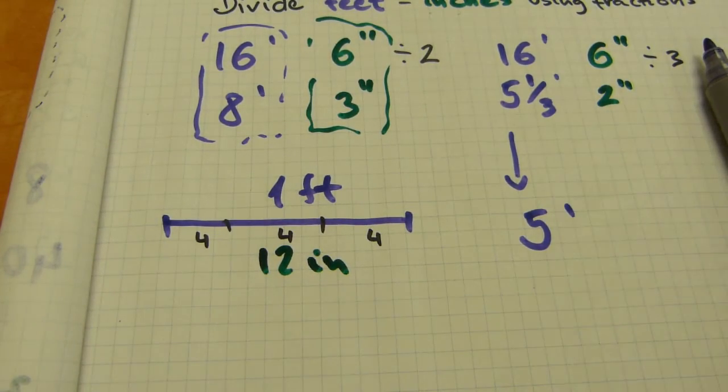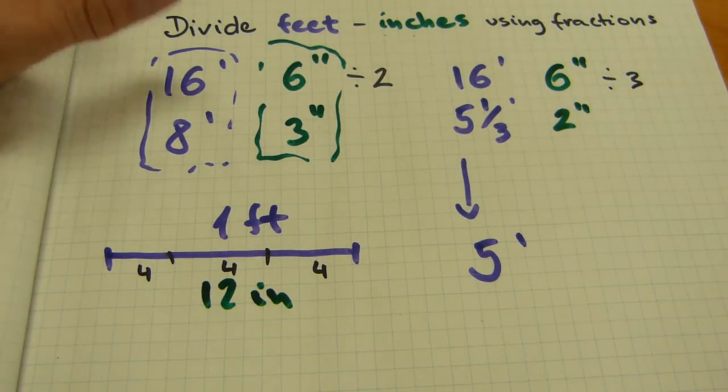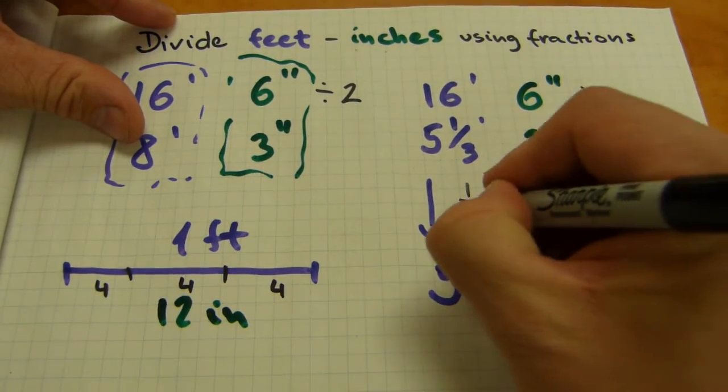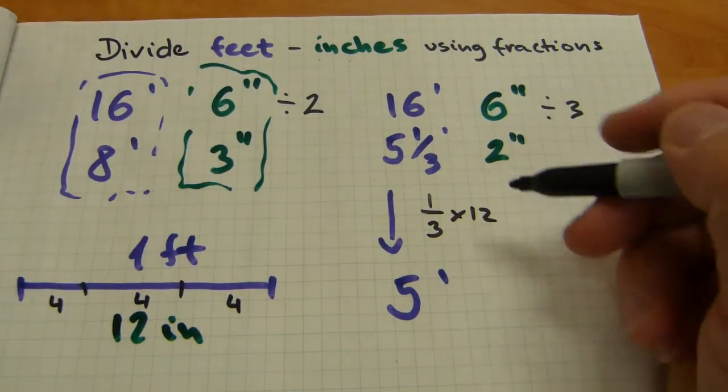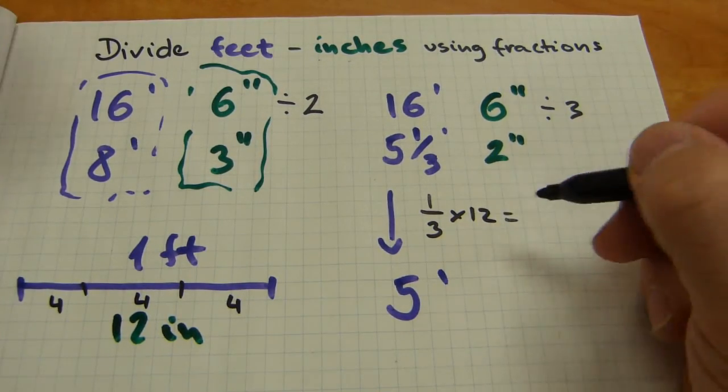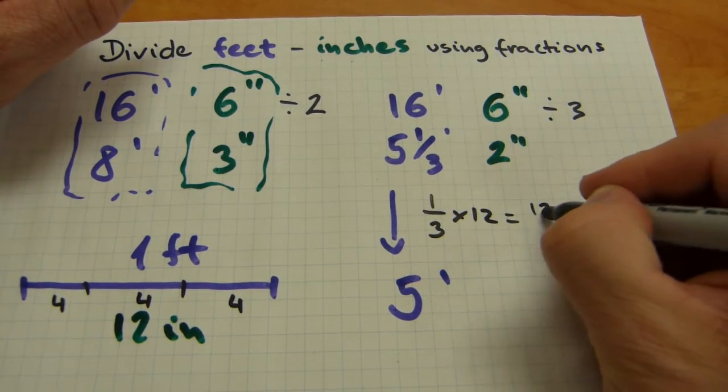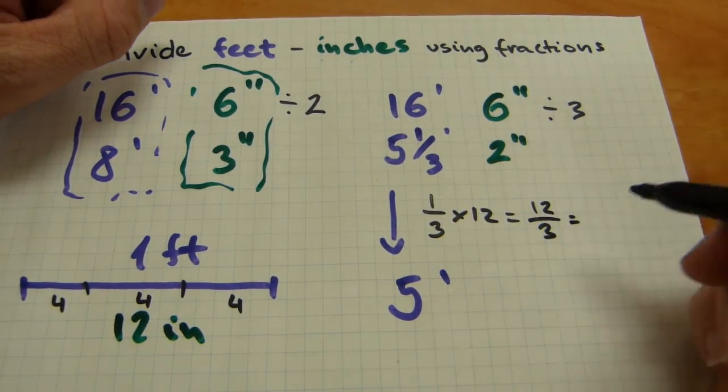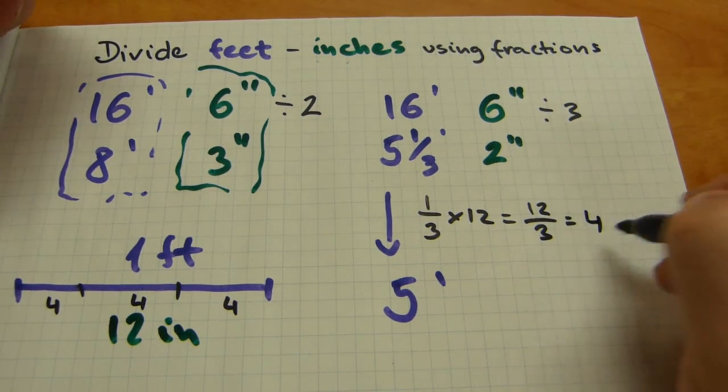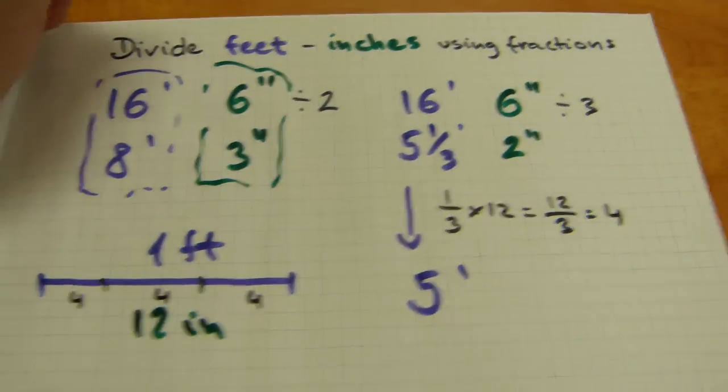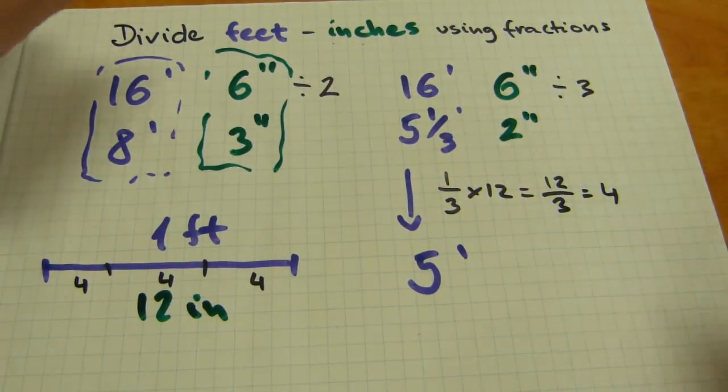In terms of numbers, how you do this is, the 1 third of a foot needs to be multiplied by 12. A fraction times a whole number. The whole number gets multiplied with the numerator, so that's 12 over 3, and every fraction is a division, 12 divided by 3 is 4 indeed. A third of a foot is 4 inches, and that's how you do it with the numbers.